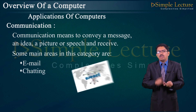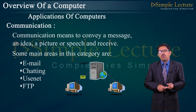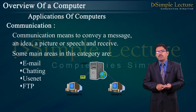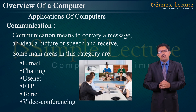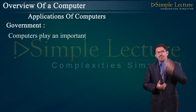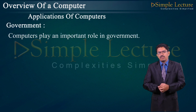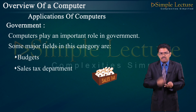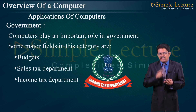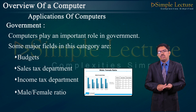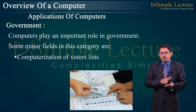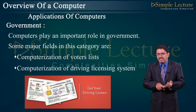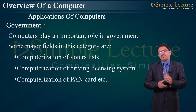Architectural engineering: computers help in planning towns, designing buildings, and determining the range of buildings on a site using two-dimensional and three-dimensional drawings. Communication: computers are used to convey messages, ideas, pictures, or speech to corresponding destinations. Main areas include email (electronic mail), chatting, Usenet, FTP (File Transfer Protocol), Telnet, and video conferencing. Government: computers play an important role in government areas such as budget, sales department, income tax department, male/female ratio analysis, computerization of voters lists, driving licensing systems, and PAN card computerization.